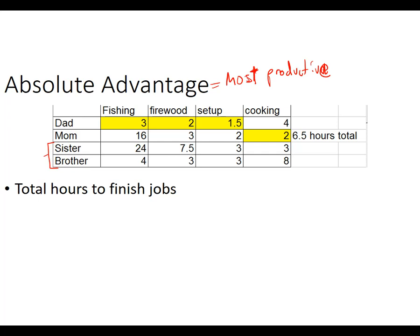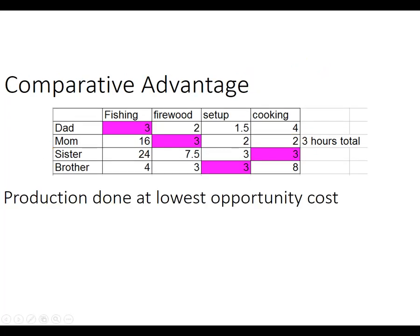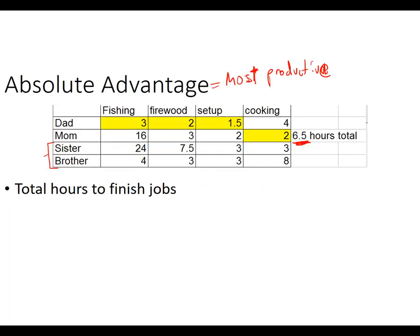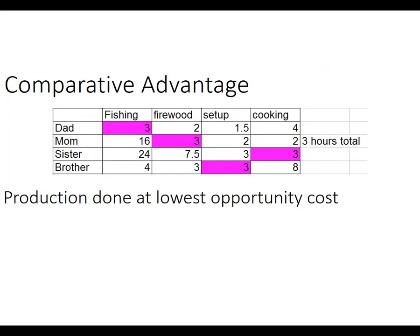Thirdly, how did the dad get good at camping? He must have had some practice. So pause the video and see if there's a better way — could we get all the tasks done faster, in under 6.5 hours? You absolutely could. The version I did here has the dad going fishing, the mom doing firewood, the brother setting up camp, and the sister doing cooking. This takes advantage of something called comparative advantage: production should be done by whoever has the lowest opportunity cost. When the brother and sister take on a task, they give up nothing because before they weren't doing anything. The dad does just one task, and we get the whole thing done in three hours total.